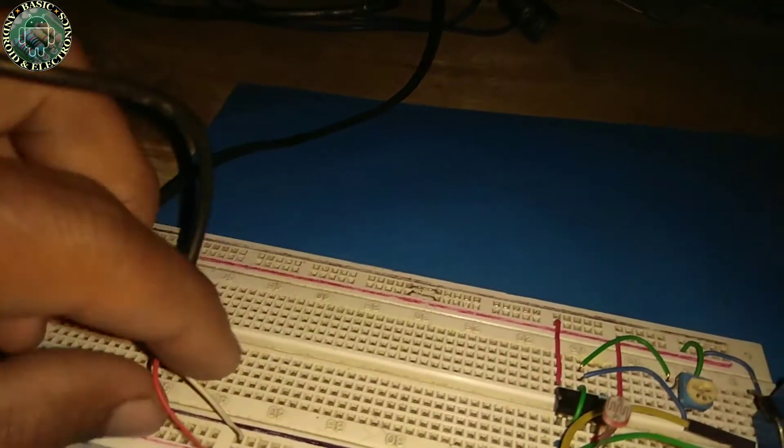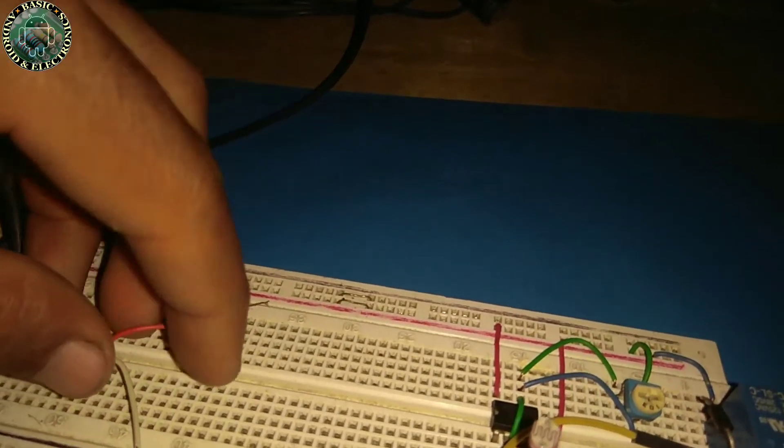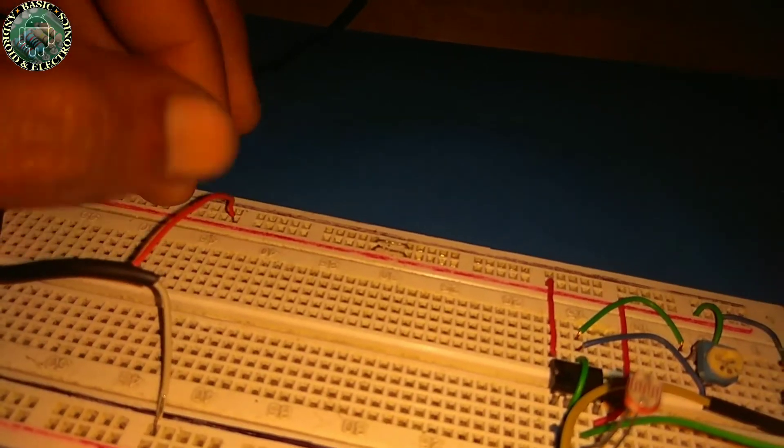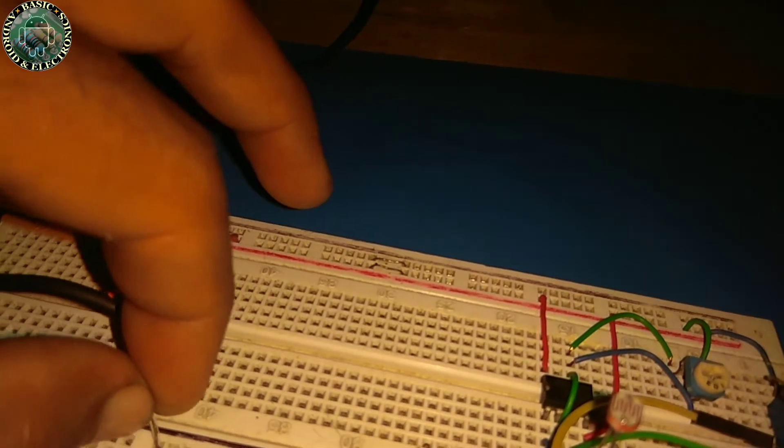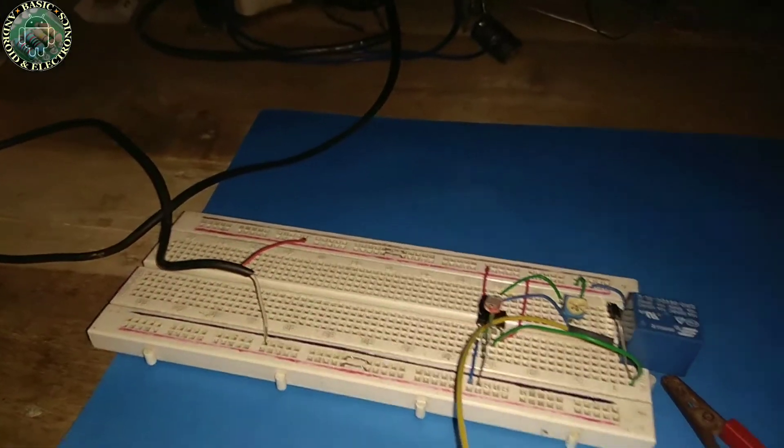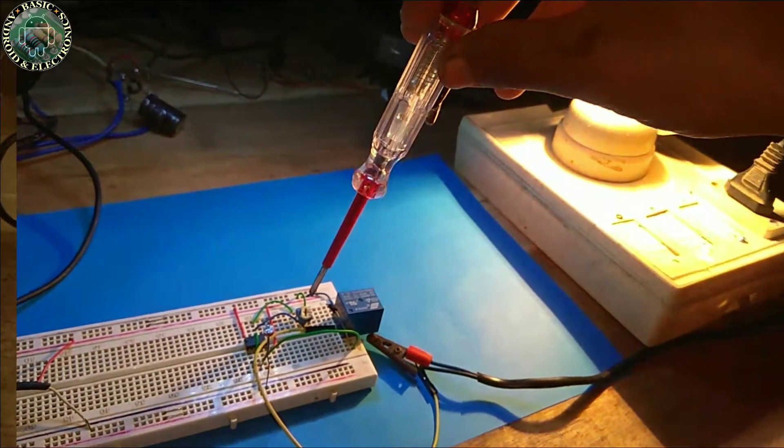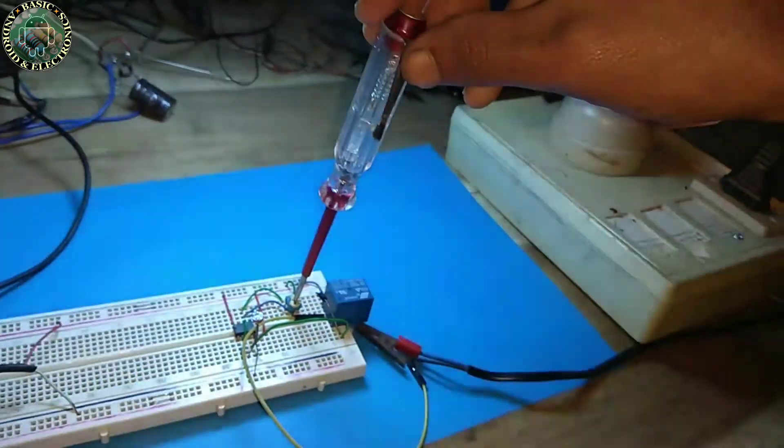And then finally connect your 5 volt power supply to the breadboard. Now adjust the variable resistor.